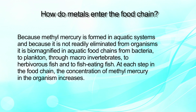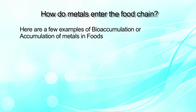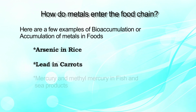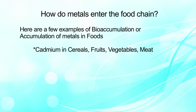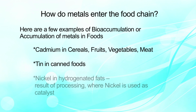In summary, people can be exposed to these metals from either the environment or by ingesting contaminated food or water. Some examples of bioaccumulation of metals in food include arsenic in rice, lead in carrot, mercury and methylmercury in fish and shellfish products, cadmium in cereals, fruits, vegetables, meat, tea, in canned foods, and nickel in hydrogenated fats.